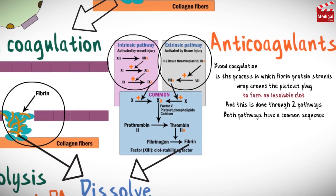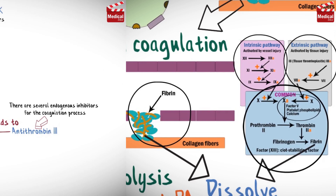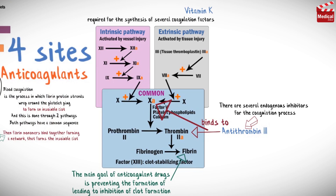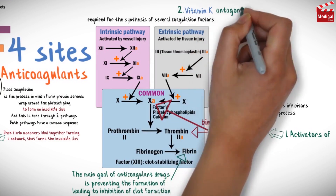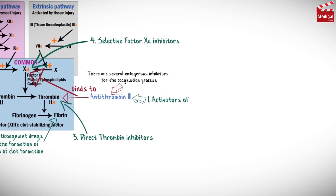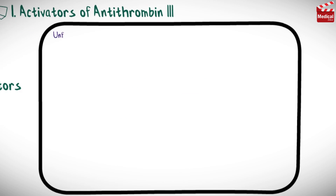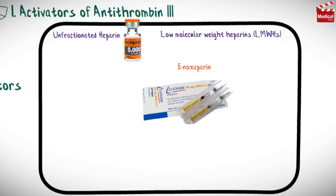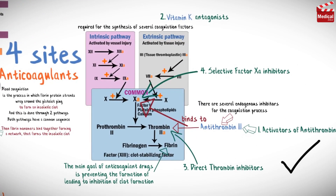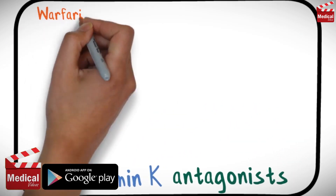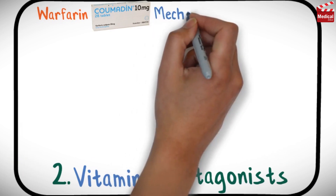In the previous lecture we started talking about the anticoagulant drugs. There are four main sites in the coagulation cascade that drugs can act on: activators of antithrombin 3, vitamin K antagonists, direct thrombin inhibitors, and selective factor 10a inhibitors. We already discussed the activators of antithrombin 3 — unfractionated heparin, low molecular weight heparin, and fondaparinux. Today we'll continue with the anticoagulant drugs and talk about the vitamin K antagonist, the very famous drug warfarin.